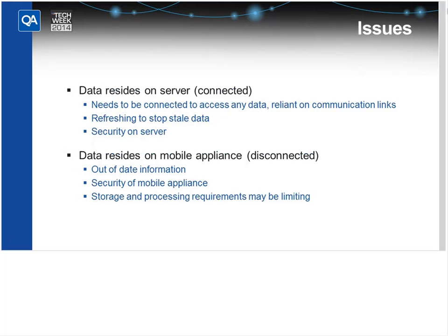Issues you may come up against when looking at Mobile BI: the first is the connected type, where you're not putting the data down onto the mobile device itself — you need it connected and reliant on the communications link at any time. For example, there are certain black spots where you don't get a link through. You might have perfect links within London, but other places you can't rely on them. So the data is not available at all times.